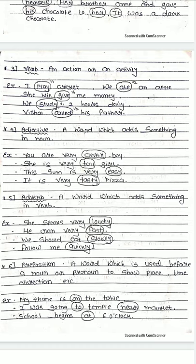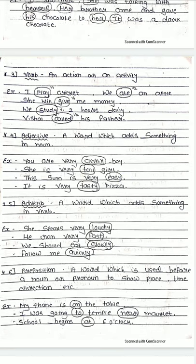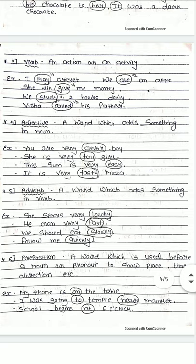Sixth is preposition — a word which is used before a noun or pronoun to show place, time, or direction. These are small words used before nouns or pronouns. Example: 'My phone is on the table' — on is a preposition. I will have a separate video for prepositions as there are around 35 different prepositions. 'I was going to the temple near the market' — to and near are both prepositions. 'School begins at six o'clock' — at is a preposition.